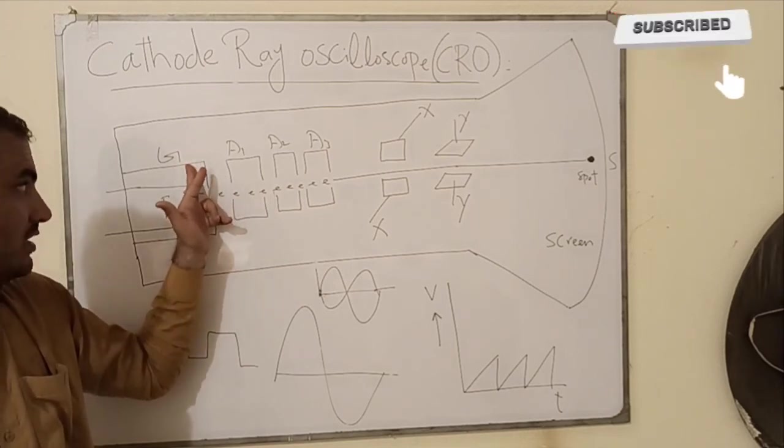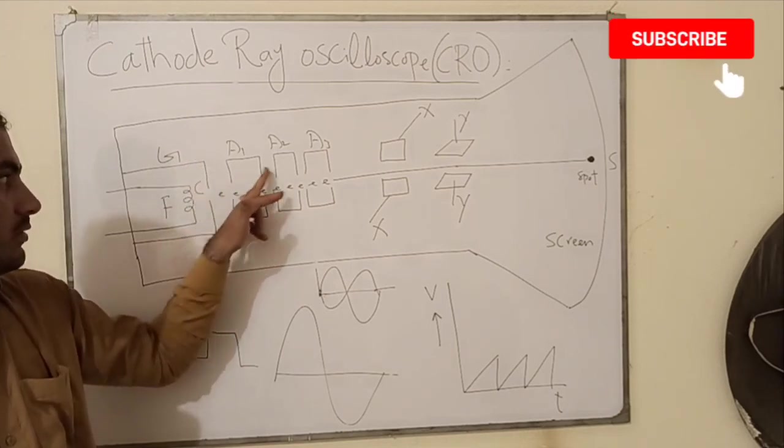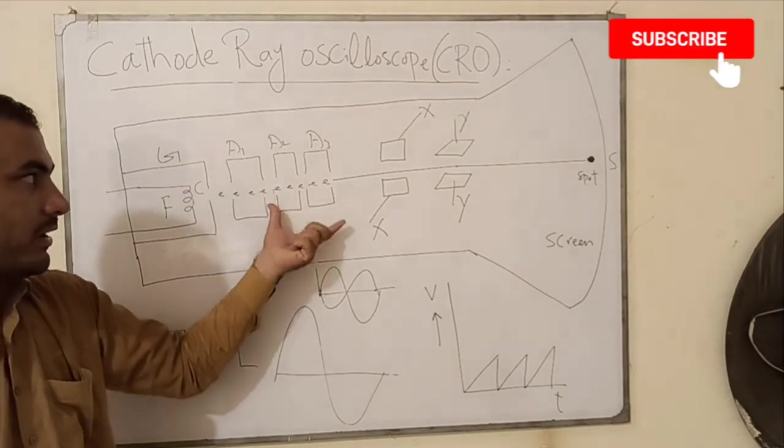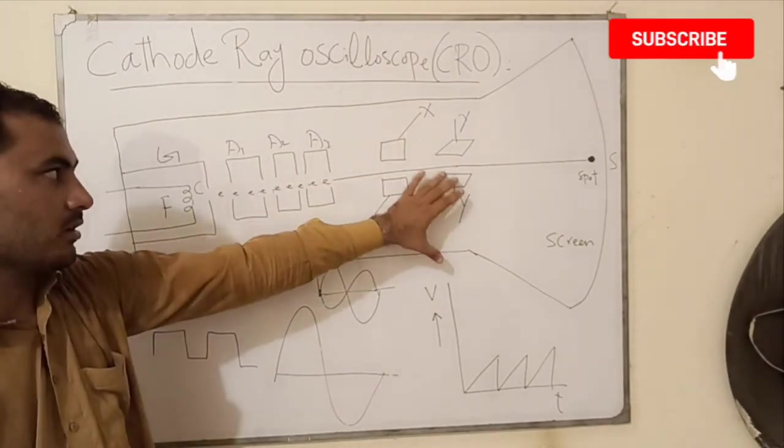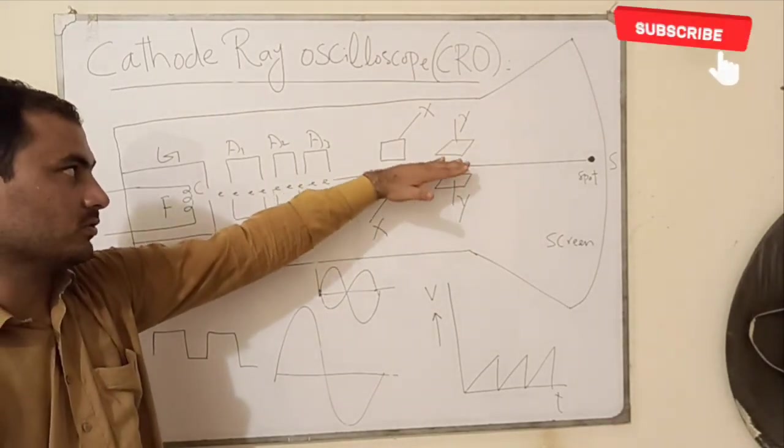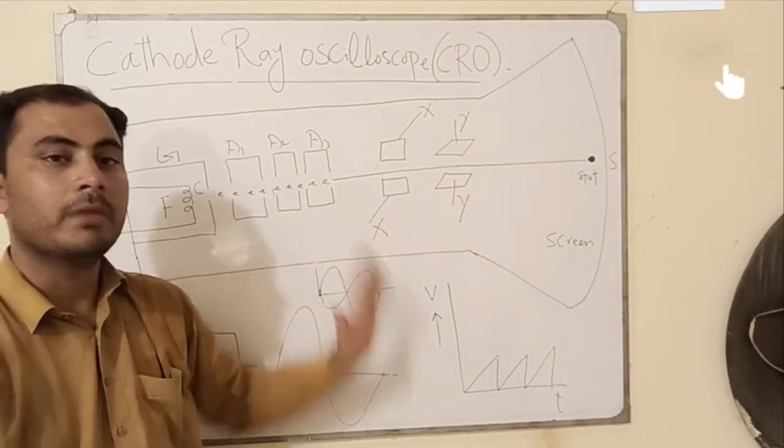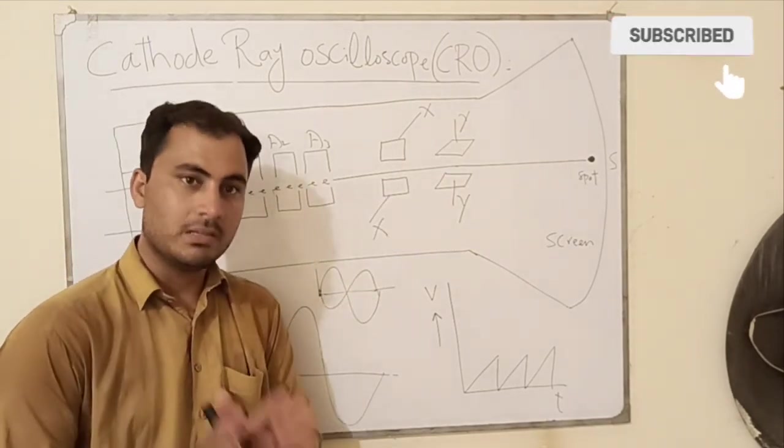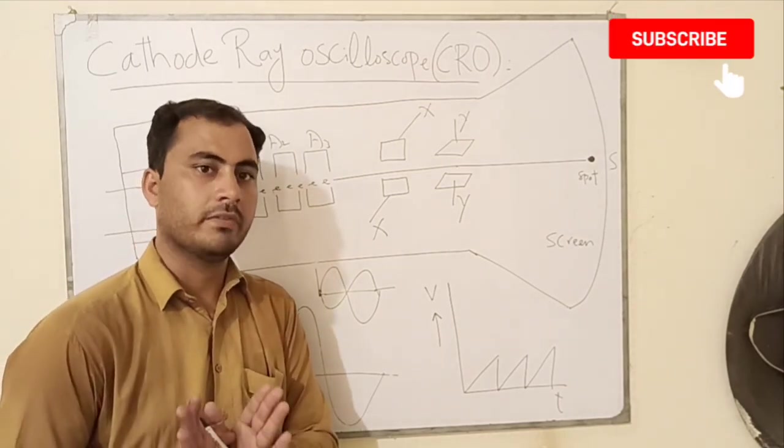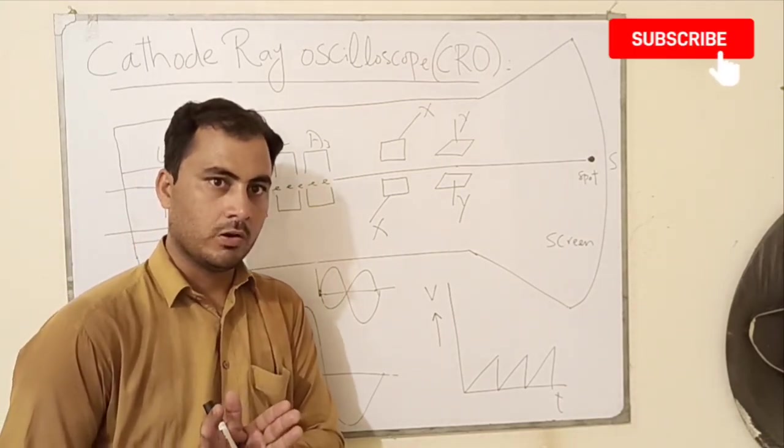The working principle of this is: filament emits electrons, then we can control the beam of those electrons with the help of grid G and also focus the beam of electrons with the help of anodes and deflect the beam of electrons with the help of these deflecting plates. Thanks for your time, please subscribe this channel for upcoming interesting videos. Once again, thanks.